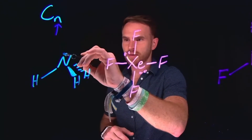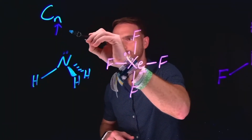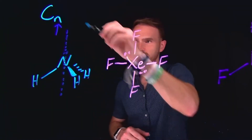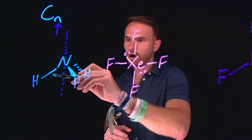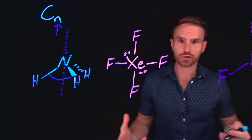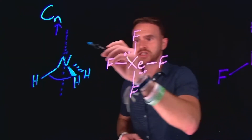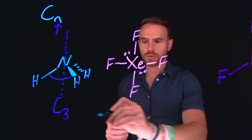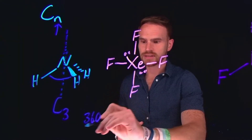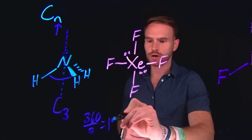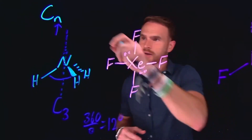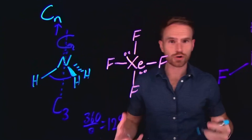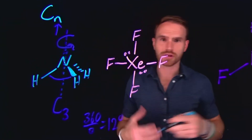Consider ammonia, for example, where we have a principal rotation axis running through the center of the nitrogen atom. Remember that all of the bond angles are about 120 degrees from one another, and this should give you an indication that this is going to be a C3 rotation axis. Because 360 degrees divided by 3 is equal to 120 degrees, if you were to rotate around this principal rotation axis 120 degrees, this molecule should look the exact same.